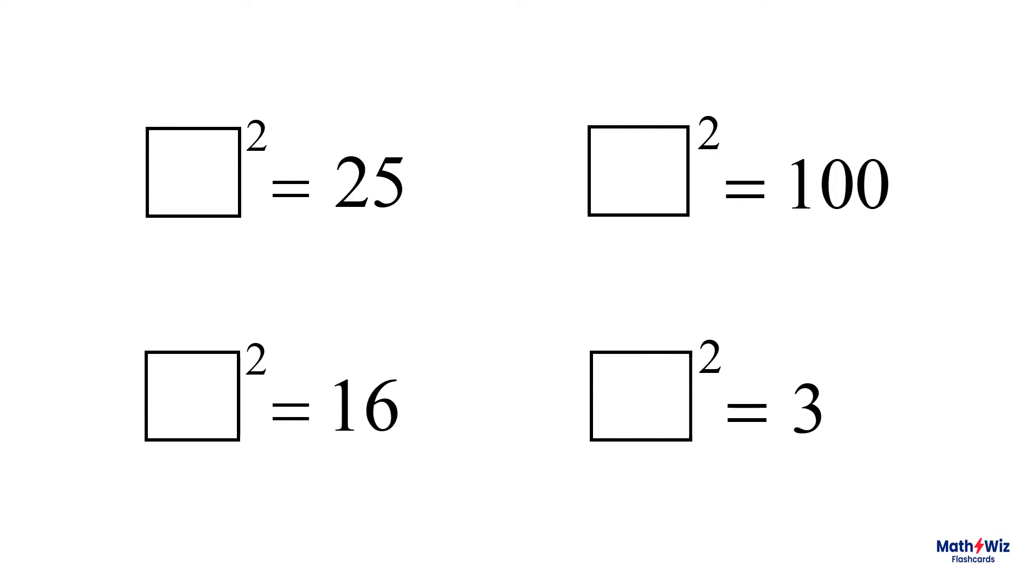But let's not forget our negative numbers. Negative 5, negative 10, negative 4, when squared, are also solutions to the first 3 equations. And negative square root of 3 squared is a solution to the last equation. So let's keep this in mind as we look at a few new problems.